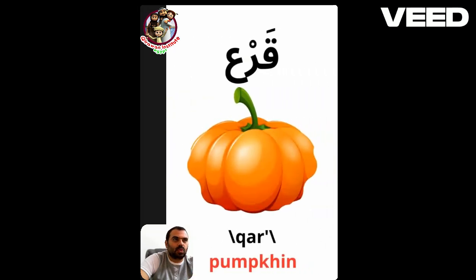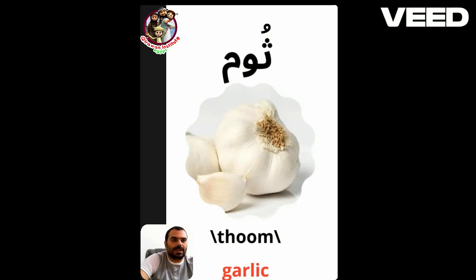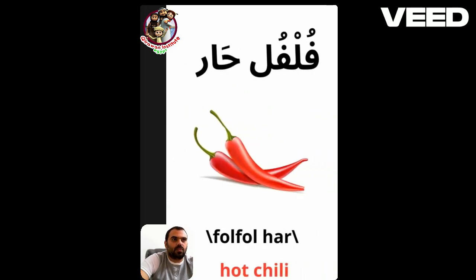Cabbage. Karra. Karra. Thoom — garlic. Fulful haar — hot chili.